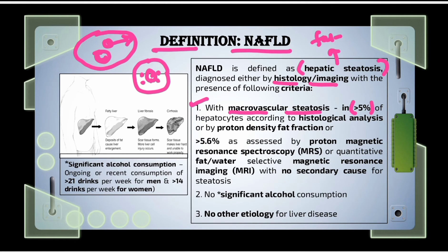Apart from the more than 5% macrovascular steatosis criteria, more than 5.6% of hepatocytes should be diagnosed with macrovascular steatosis by the better diagnostic method of proton magnetic resonance spectroscopy (MRS) or by quantitative fat-water selective MRI. There should be no secondary cause for the development of this steatosis.